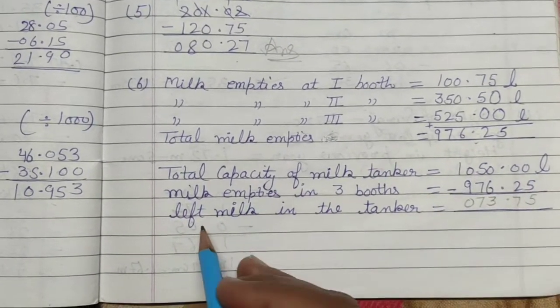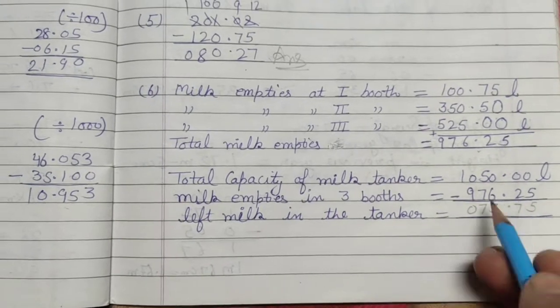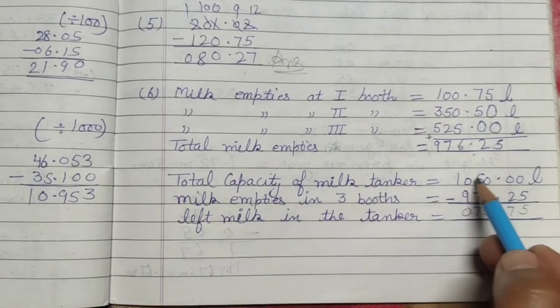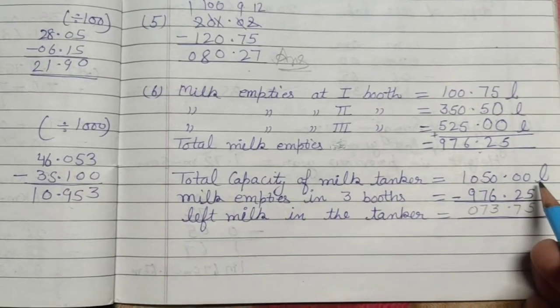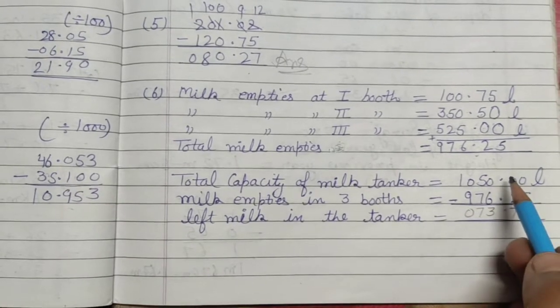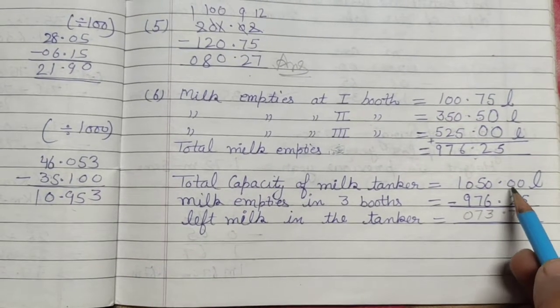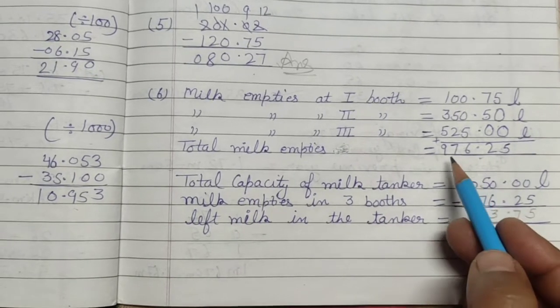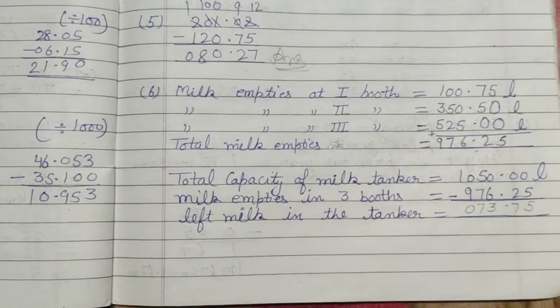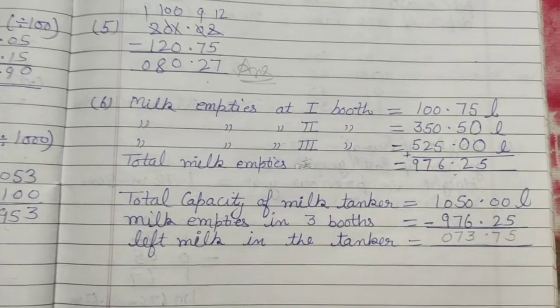This is the number that we need to know. How much milk is left in the tanker? Now see, 1050 liters, which is the decimal, which is the milliliter. So there is no number here, so this is why I have written here 0, 0, 976.25. Okay? Now we have to minus this.